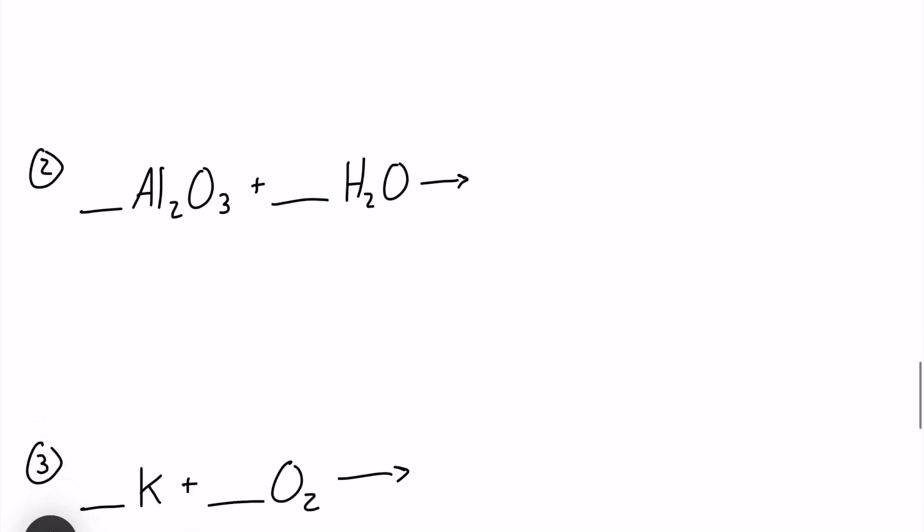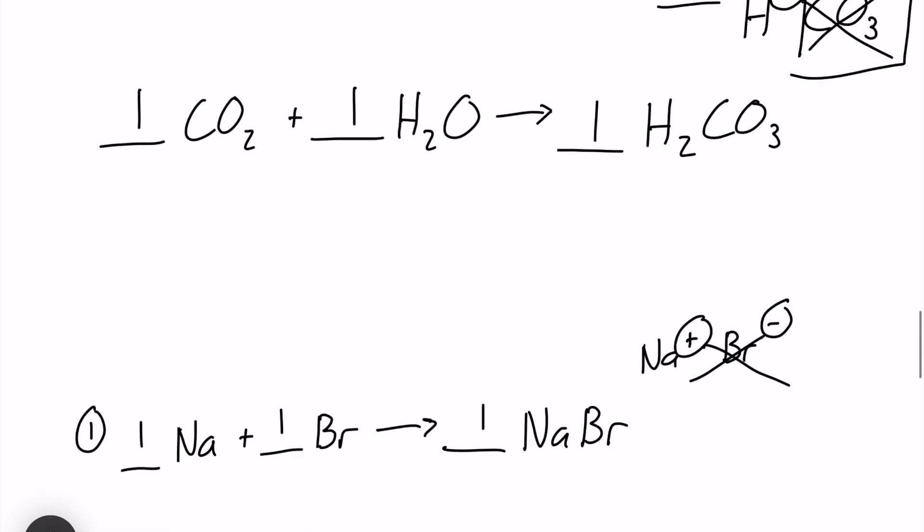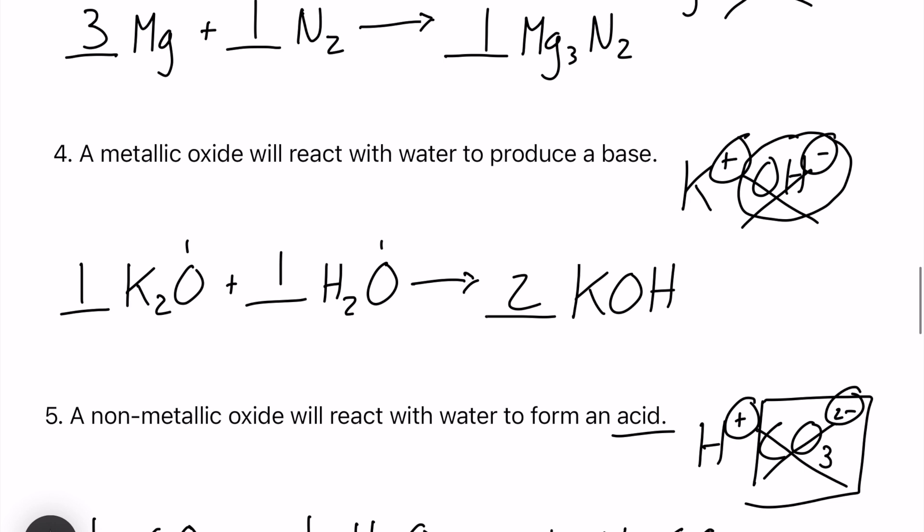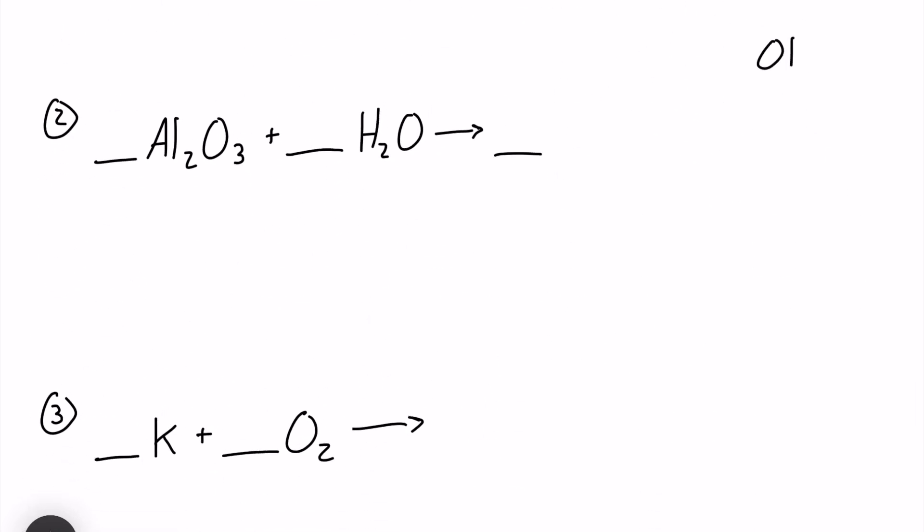The next one, we have Al2O3 and water reacting. Let's scroll up and find a rule that applies to this. I think I found it right here. It says a metallic oxide will react with water to produce a base. So remember folks, all bases will have that hydroxide ion at the very end, and the only thing other than oxygen and hydrogen in this scenario is Al3+. So we know that our 3+ is going to drop down beside our OH, and our answer should be AlOH3.